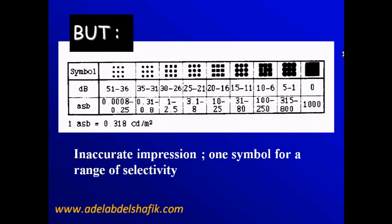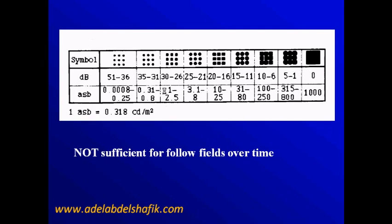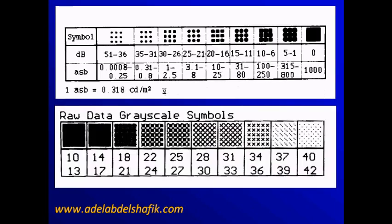Each symbol covers a certain range — for example, a symbol may be used when the sensitivity is between 26 to 30. Over time, if you repeat the same test for the patient, the sensitivity of the area may change but the computer is still using the same symbol. Also, different machines use different ranges for the same symbol. So we shouldn't depend on this area at all.